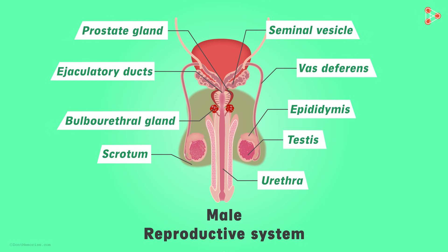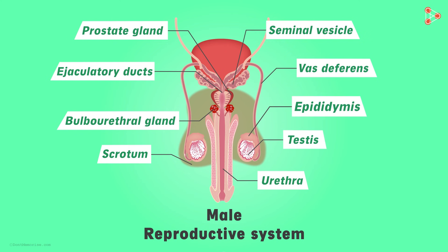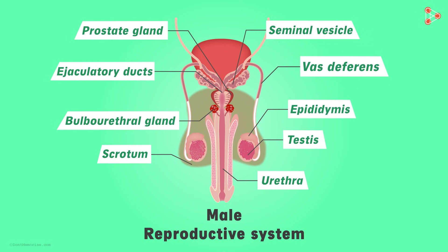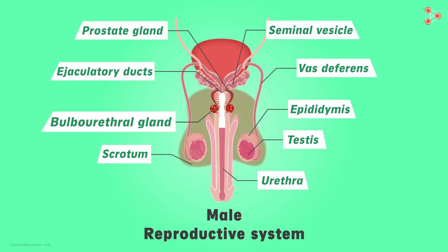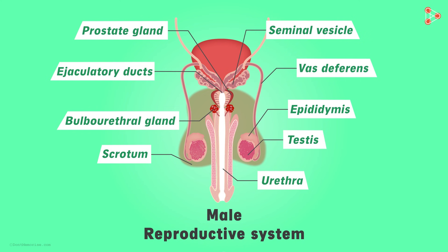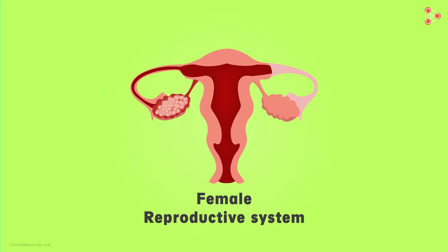Now we are done with the basics of the male reproductive system. To recap: the sperms are produced by the testes. The mass of coils called the epididymis carries the sperms to the vas deferens. From there it goes to the ejaculatory duct where it gets mixed with nourishing fluids, then reaches the urethra. After the secretion from the Cowper's gland, the formation of semen is complete. Do watch our next video to learn about the female reproductive system!